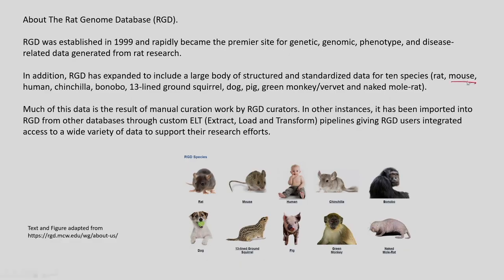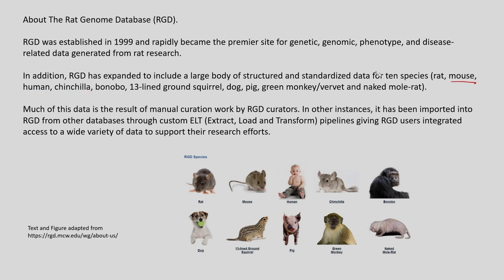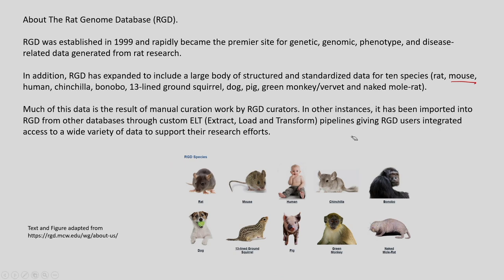RGD has expanded to include a large body of structured and standardized data for other species including mouse, human, chinchilla, bonobo, squirrel, dog, pig, monkey, vervet and mole rat. Much of this data is the result of manual curation by RGD curators. In other instances, it has been imported into RGD from other databases through custom extract-transform-load pipelines, giving RGD users integrated access to a wide variety of data to support their research. You can see the pictorial representation of the various RGD species for which genetic, genomic, phenotypic and disease-related data are available.